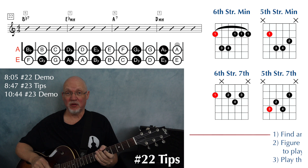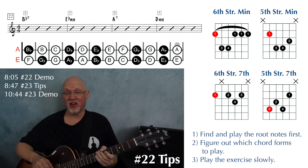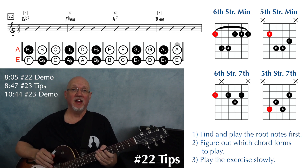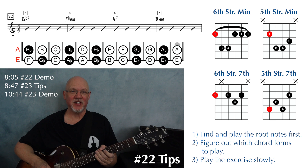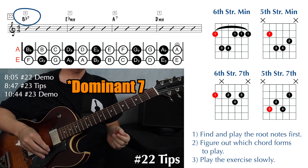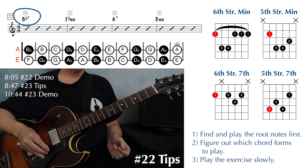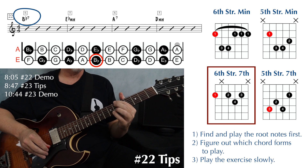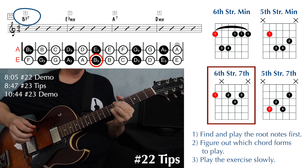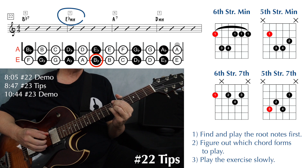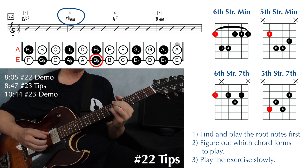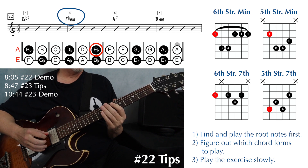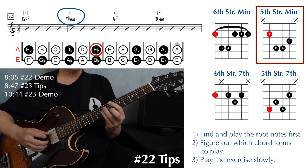Exercise 22 toward the bottom of page 16. Now we're combining dominant seven and minor shapes. Our dominant seven chords are going to be on the sixth string again, and the root for our minor chords will be on the fifth string. Our first chord is B flat seven on string six — we need to find our B flat note on string six, that'll be at the sixth fret, and that's the sixth string root, so we use our sixth string dominant seven shape. And then we have an E flat minor on string five — we need to find our E flat note on string five, that'll be at the sixth fret as well, and because that is a fifth string root, we're going to use the fifth string minor shape.